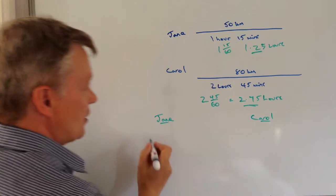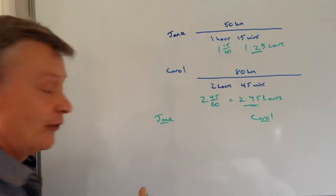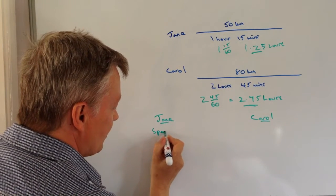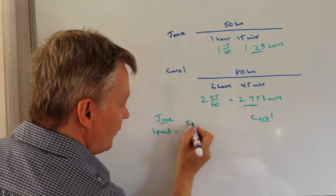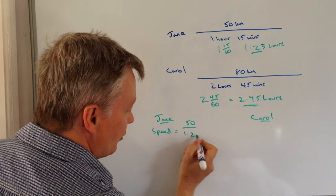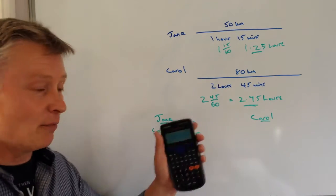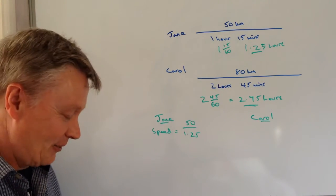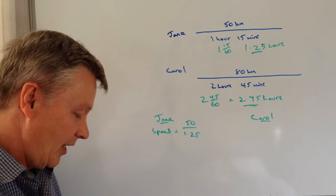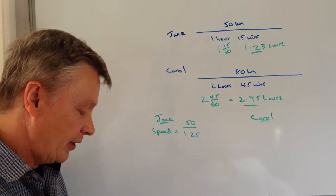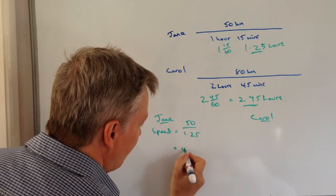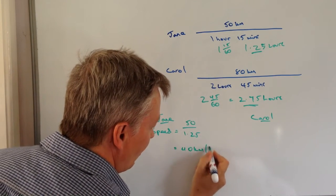Okay, so speed, which is what we're looking for, equals distance divided by time. The distance that Jane does is 50 kilometres and the time is 1.25. If I put that into my calculator—I've got my calculator with me today—that's going to give me a speed for Jane of, and you can follow along, 40 kilometres per hour.